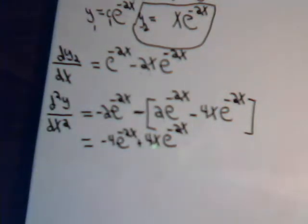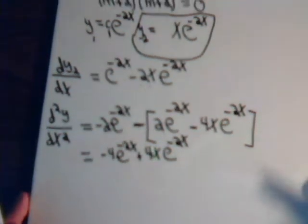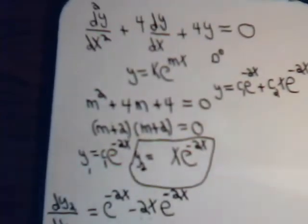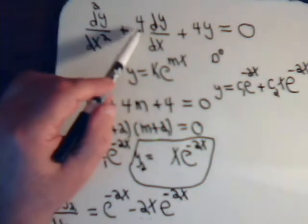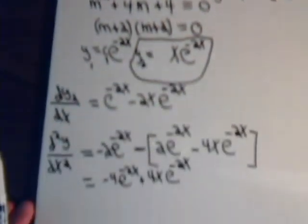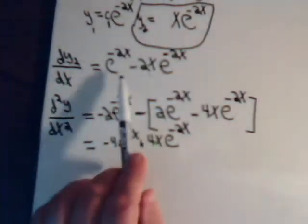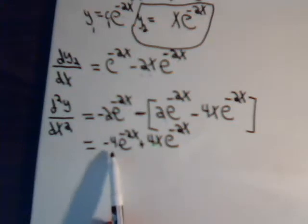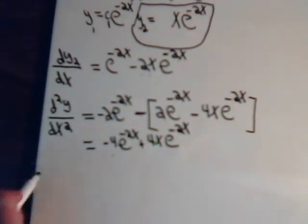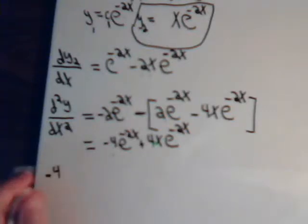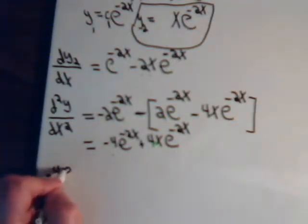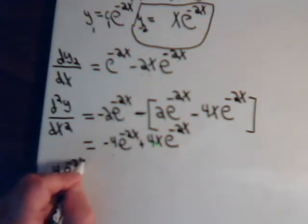So that's the second order derivative. Now let's see, for our equation, we need the second order derivative, and then we need plus 4 times this one. Let's write this in. This is the second order one, so we have minus 4 e to the minus 2x plus 4x e to the minus 2x.